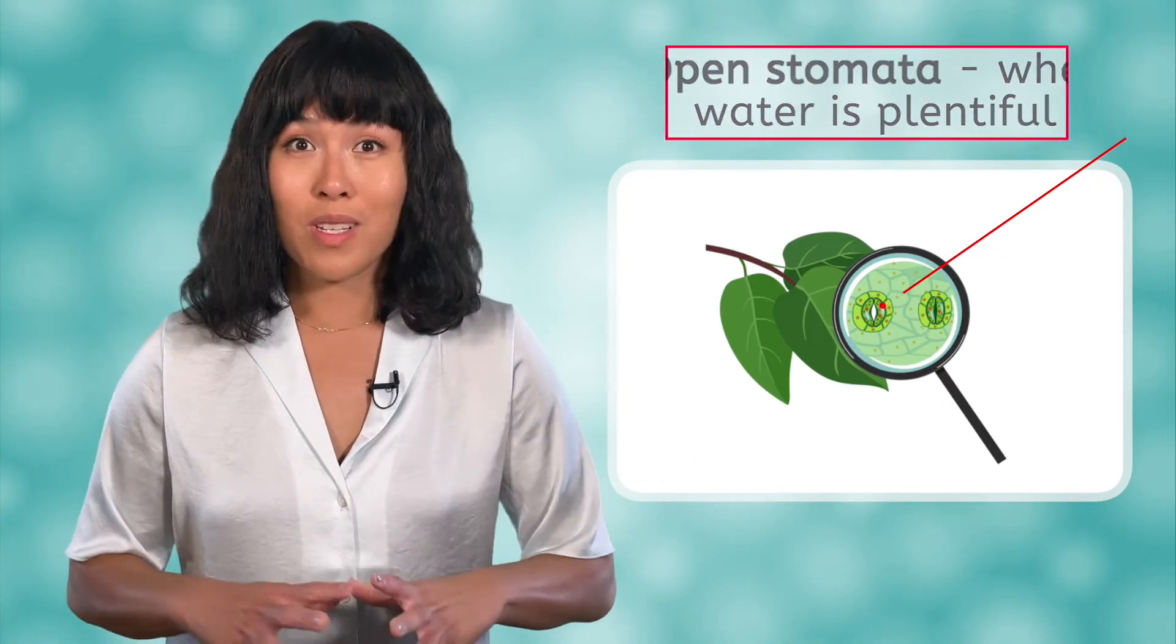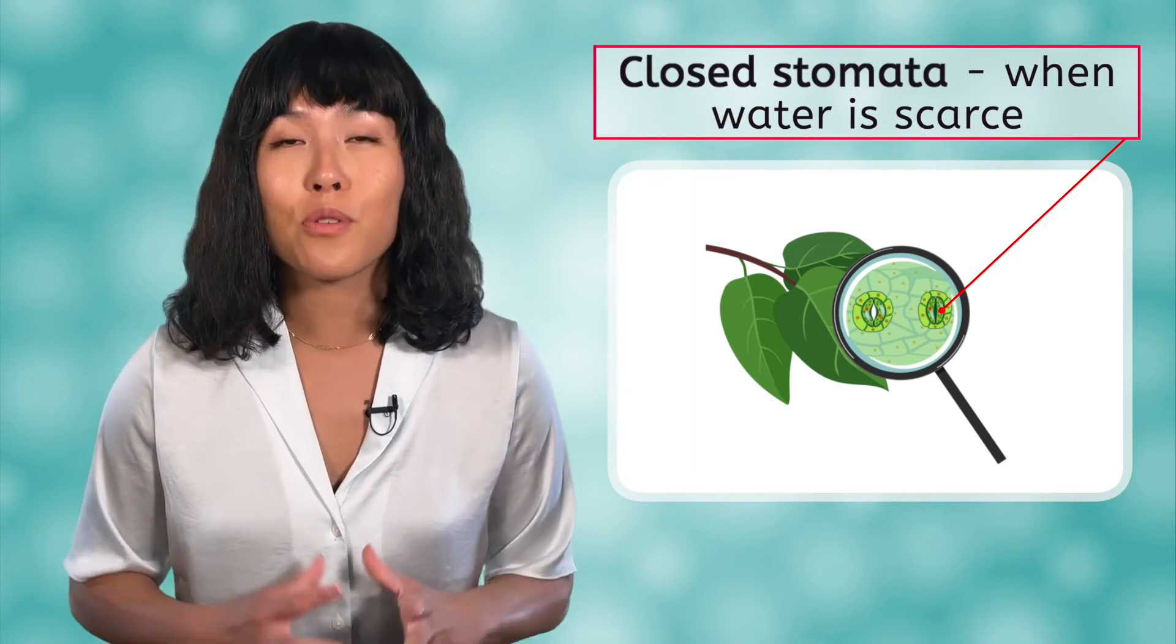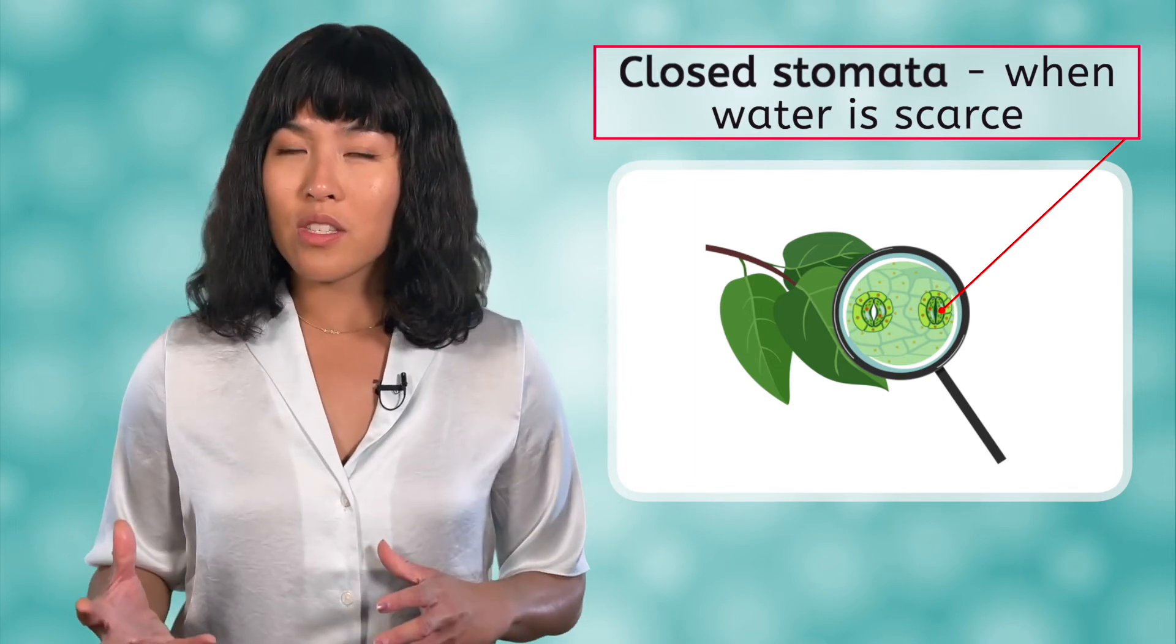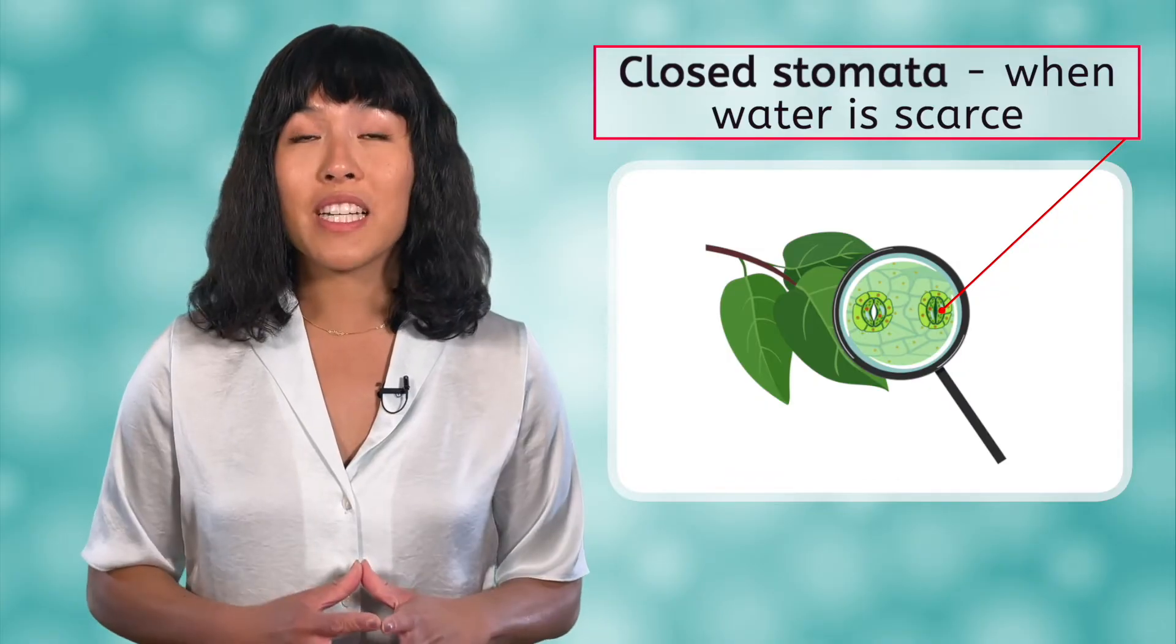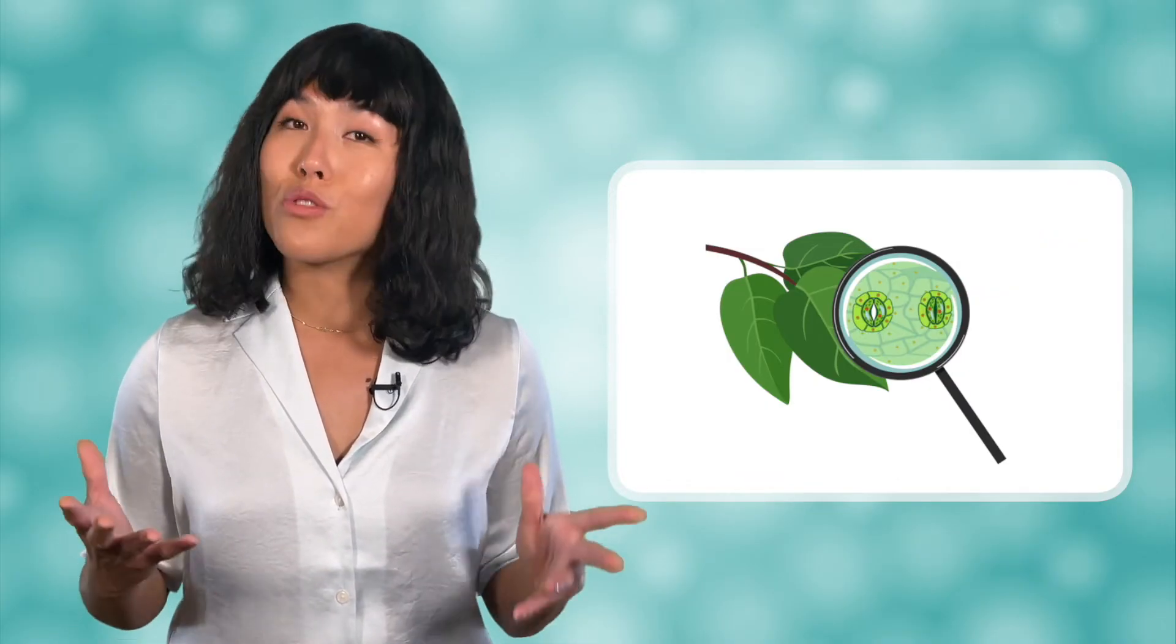When water becomes more scarce, the plant can close the stomata to prevent transpiration, though in doing so it may hamper its ability to do photosynthesis. As always, life is about trade-offs.